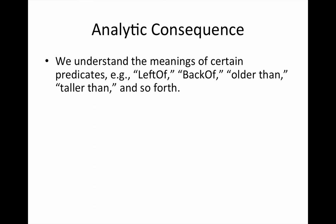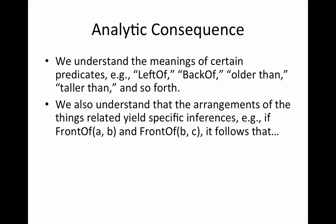We also understand the arrangements of the things related yield specific inferences. Let's suppose, for example, that if A is in front of B and B is in front of C, it follows that A is in front of C. This inference is an analytic consequence of the meaning of the relational predicate front of, and the arrangement of the individuals so related.